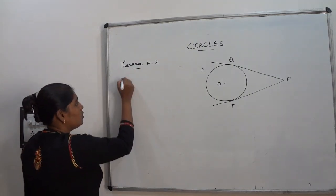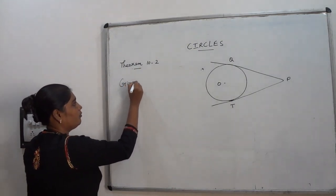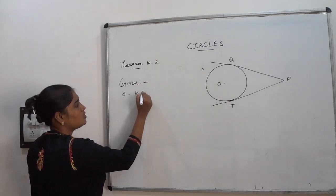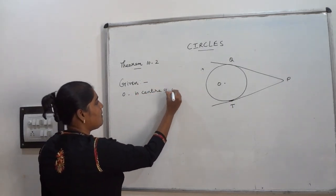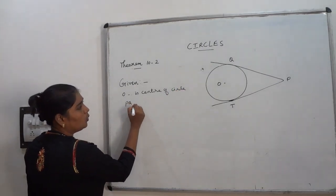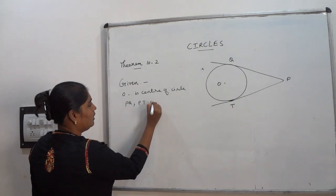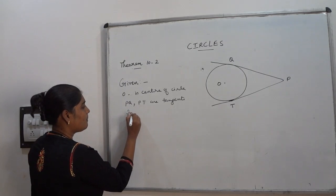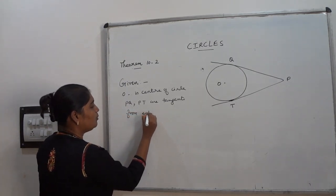So write it here. What are the things given to you? O is the center of a circle. PQ, PT are tangents from an external point.